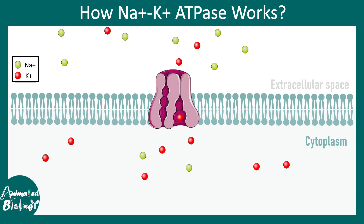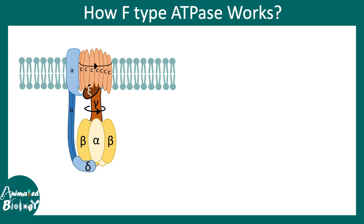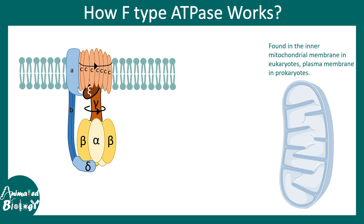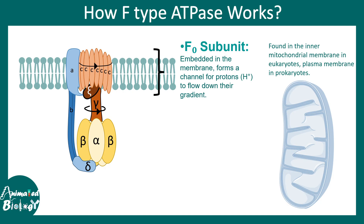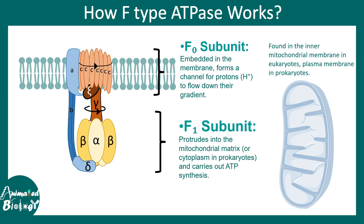Phosphorylation of the pump is the initial driving force for these ion movements; eventually the pump returns to its original conformation, starting a new cycle. F type ATPase is found mostly in the inner membrane of mitochondria. The F0 subunit is embedded in the membrane and forms a channel for protons to move down their gradient. Think of it as a molecular dynamo — the driving force is a mechanical rotation in the F0 subunit, which is translated to the alpha and beta subunits.